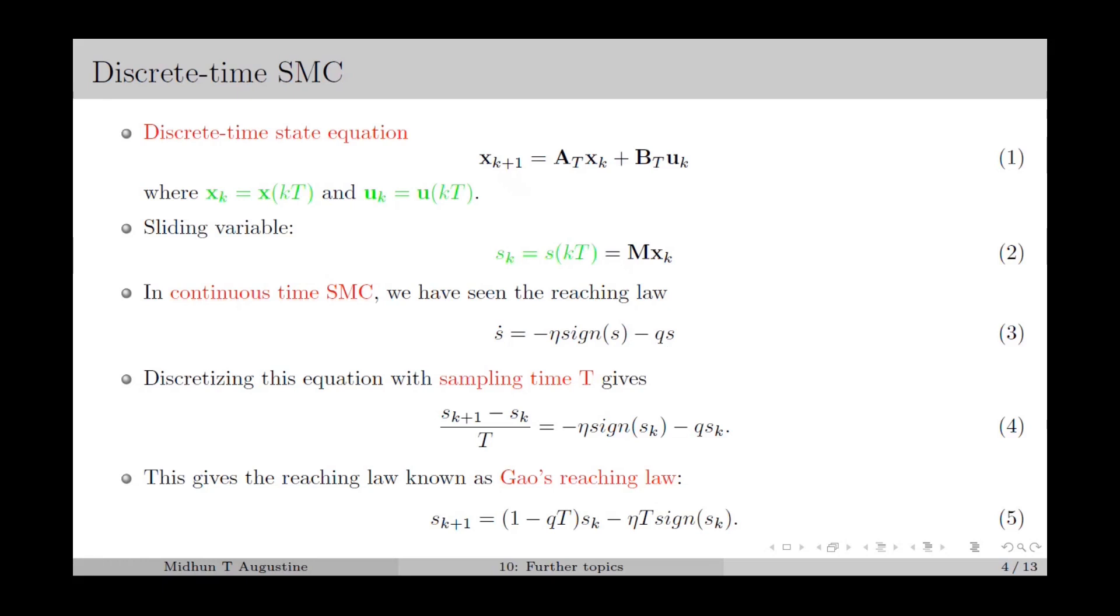In a similar way, we can construct a reaching law in discrete time as well. For that, we discretize this equation with sampling period T, which results in equation 4.